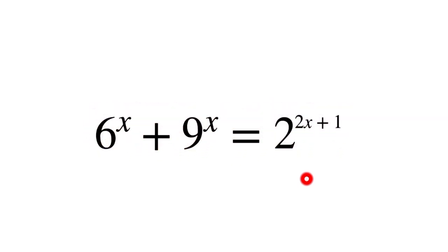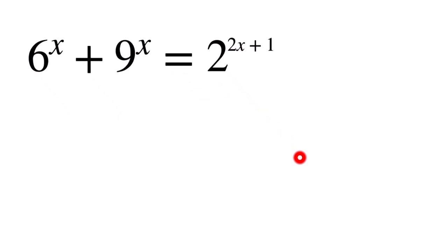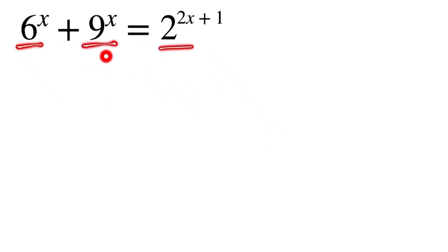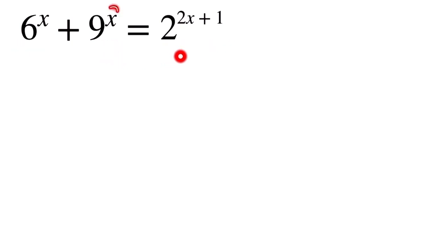Welcome back. Today we are going to solve this olympiad question. Can you solve this question? If you can, pause the video and take a try. Otherwise, let's see the solution. This is our question: 6 to the power x plus 9 to the power x is equal to 2 to the power 2x plus 1. We have to find the value of x.